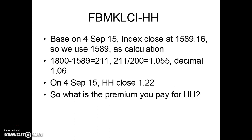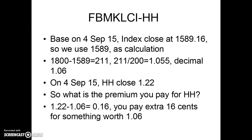On 4th September, HH closed at 1.22. The premium is the closing price minus the intrinsic value: 1.22 minus 1.06 equals 16 cents. So you pay an extra 16 cents for something worth 1.06 — the intrinsic value of HH is 1.06, but the closing price is 1.22. Usually there's a premium; you cannot get a discount on structured warrants — it's impossible.